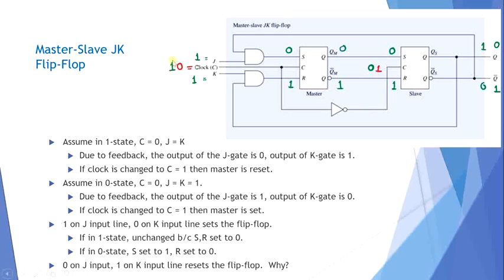When the clock changes to 1, the master is enabled and will reset, while the slave is disabled and remains in its previous state. Previously when the clock was 0, the master was disabled and the slave was enabled. When C returns to 0, the contents of the master are transferred to the slave, causing the new state of the master-slave JK flip-flop to become state 0.